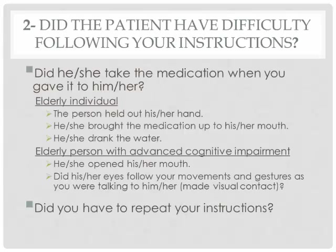The second item on the RADAR is: did the patient have difficulty following your instructions? When you enter the room to give medication to a patient, you expect certain behaviors to happen — for instance, you expect the patient to take the medication with his hands, put it into his mouth, and drink some water. If the patient is doing all these behaviors and taking his medication as requested, then the patient is following your instructions. Otherwise, if you have to repeat your instructions, you score yes — the patient had difficulty following your instructions.